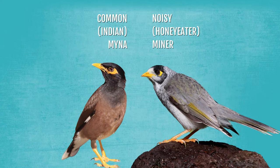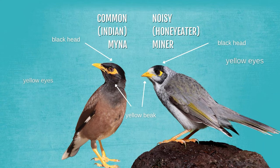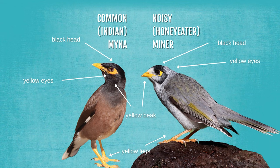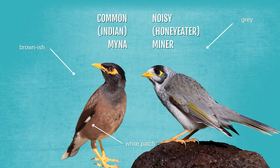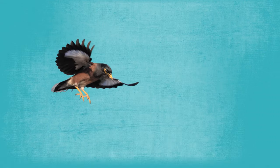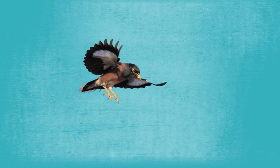Both of the miners have black heads with yellow beaks, yellow skin around the eyes and yellow legs. But the big difference is the body colour of a common myna is a brownish colour, whereas the body colour of a noisy miner, the native honey eater, is grey. Also the common myna has a white patch on the wings, something that's visible even in flight, so they're pretty easy to distinguish.